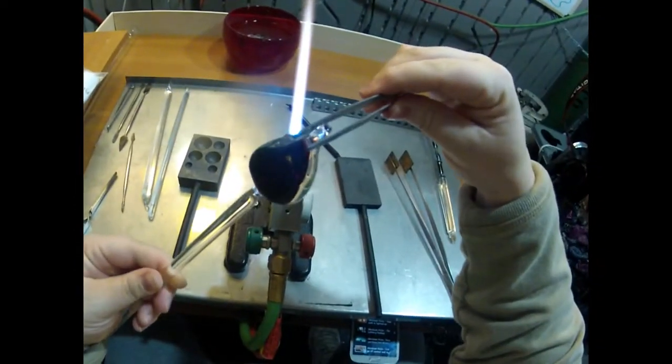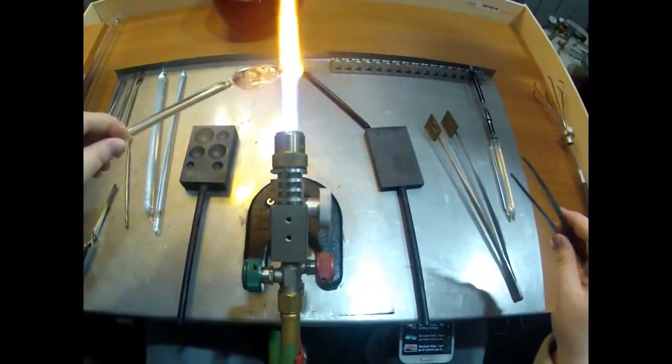Now I'll detach the pendant, flame polish it just a bit, and put it in the kiln.